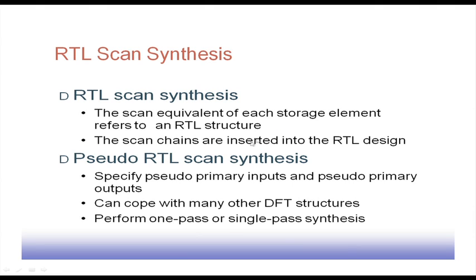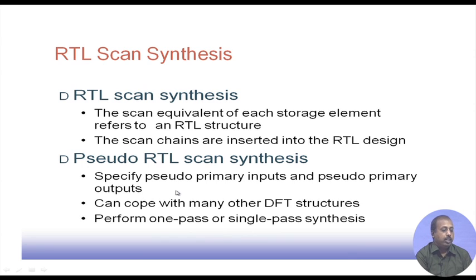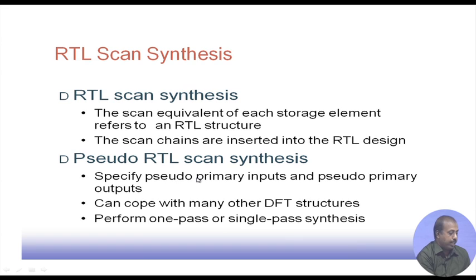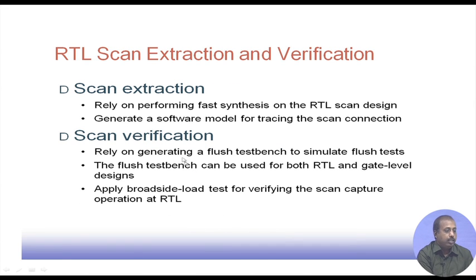There is also a pseudo RTL scan synthesis, which specifies pseudo primary inputs and pseudo primary outputs and can cope with many other DFT structures in a single synthesis pass. Some inputs can be designated as pseudo primary inputs or outputs, and only those flip-flops or inputs/outputs are placed onto a scan — effectively enabling partial scan. For scan extraction, a first synthesis pass is performed on the RTL scan design to generate a software model for tracing the scan connections.